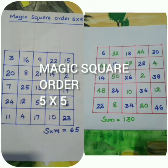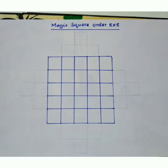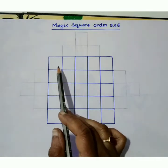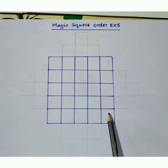Magic square order 5 into 5. Hi viewers, welcome to my channel Vedic Math by Vinata. Today I'm going to explain how easily we can fill magic square order 5 into 5, so 5 rows and 5 columns, total 25 boxes.